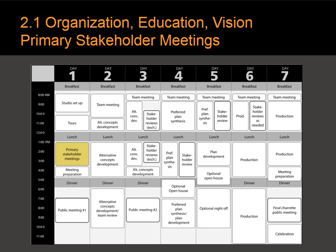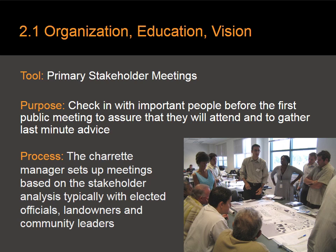The first meetings are primary stakeholder meetings — who are you going to meet with on the first day? You're not going to meet with everybody, as you don't have any designs ready yet, and you're still going to the public meeting that night. These primary stakeholder meetings are just with important people like officials, landowners, community leaders. You just want to check in with them. They're almost political in nature — to make sure they're going to come, that their people are going to come, and to get last-minute advice before you go public that night.